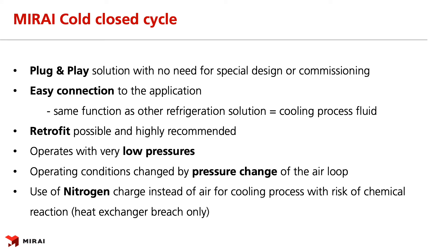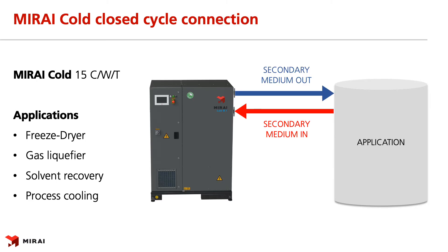Here are some benefits of Mirai Cold closed cycle: it is a plug-and-play solution with no commissioning, running in 45 minutes after installation begins; it can easily replace current refrigeration solutions used; it operates with very low pressures, similar to bike tire pressure; and operating condition is changed by changing the air loop pressure. Use of nitrogen is recommended for applications where a chemical reaction could occur when the heat exchanger is breached. Closed cycle machines cool down other working fluid without coming into direct contact with it — as seen in this example, Mirai Cold 15T connected to a cylinder cold application such as freeze dryer, gas liquefier, solvent recovery, or any process cooling with ULT temperatures.